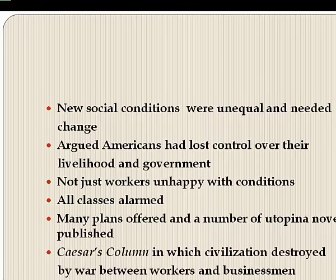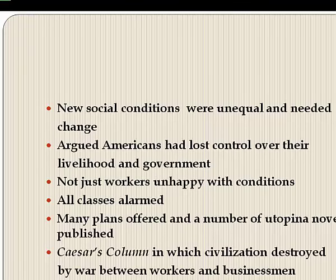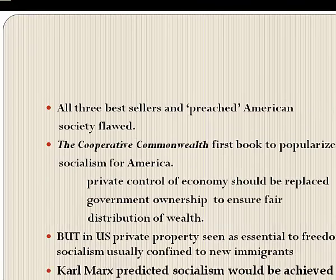Not just workers were dissatisfied — a sense of alarm at social changes brought on by industrial capitalism spread to all classes. Social thinkers offered many different ideas and blueprints for change. At the end of the 19th century, an unprecedented number of utopian novels were published, including Caesar's Column by Ignatius Donnelly, in which civilization was torn apart in a brutal war between workers and businessmen. The most popular books offering remedies for unequal distribution of wealth were Progress and Poverty, Cooperative Commonwealth, and Looking Backward — all bestsellers that spoke to the growing belief that American society was deeply flawed.